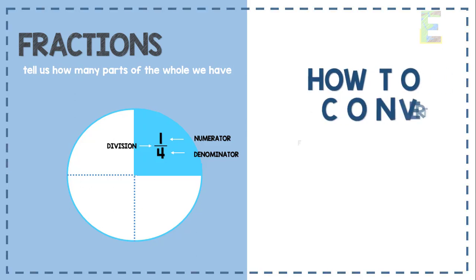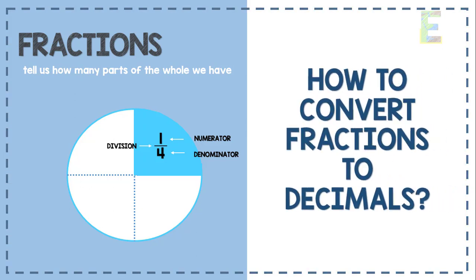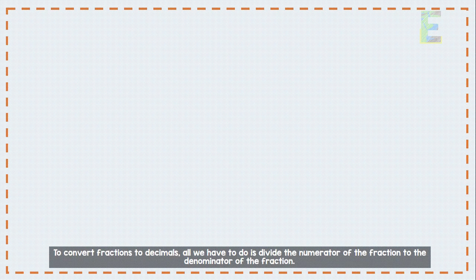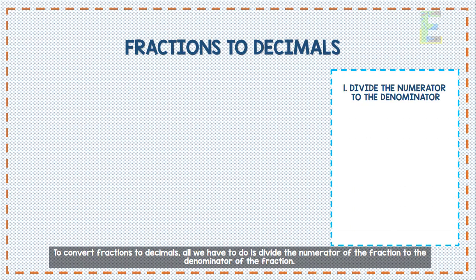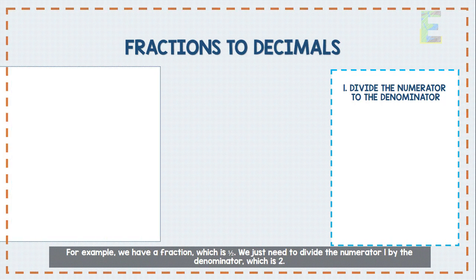So, how to convert fractions into decimals? To convert fractions into decimals, all we have to do is divide the numerator of the fraction by the denominator of the fraction. For example,